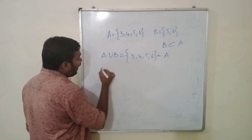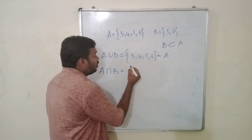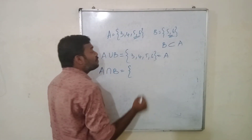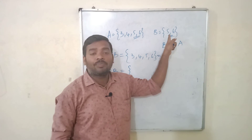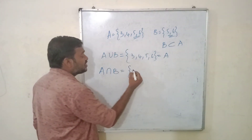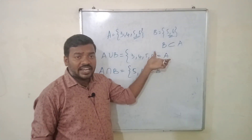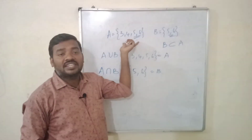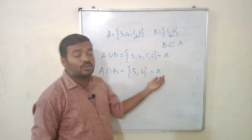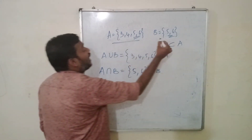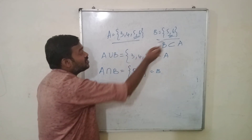Let us go for A intersection B. What are the common elements of A and B? Those are 5 and 6 — because B is a subset of A, every element of B is present in A, so every element of B is common. A intersection B equals {5, 6}, which is set B. So for subsets: A union B is the bigger set, and A intersection B is the smaller set.